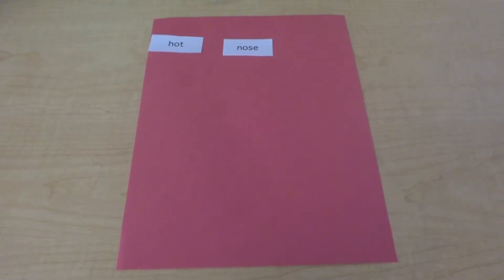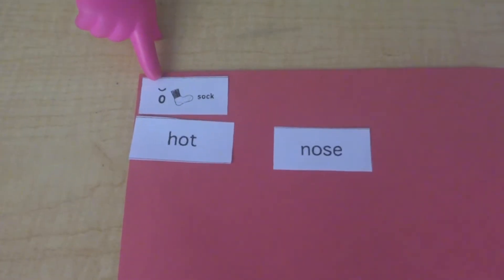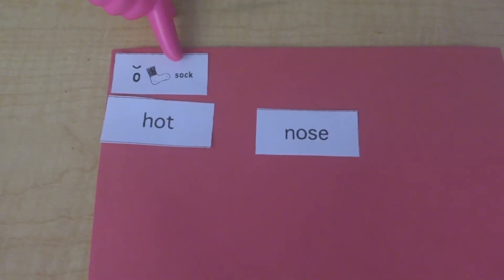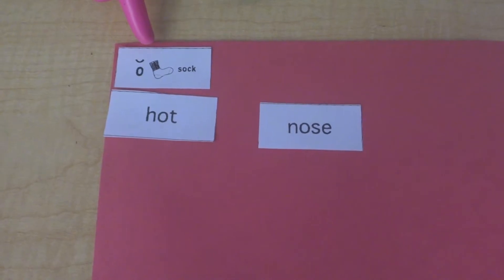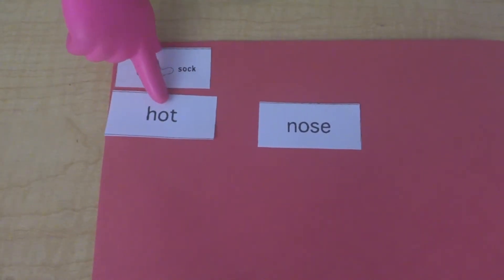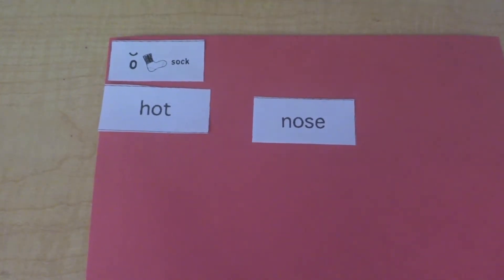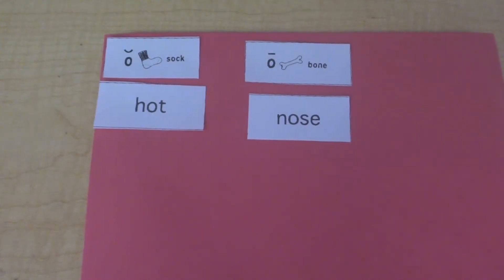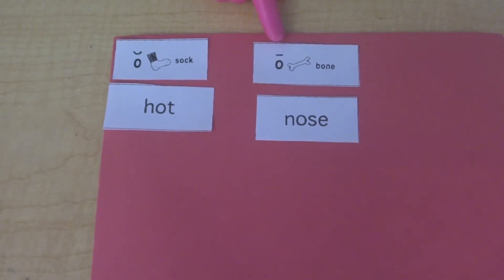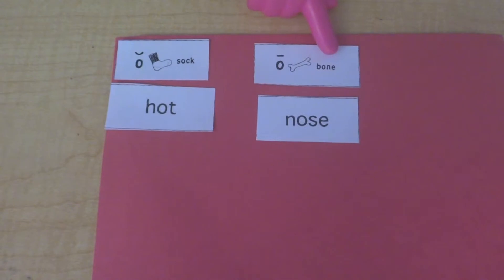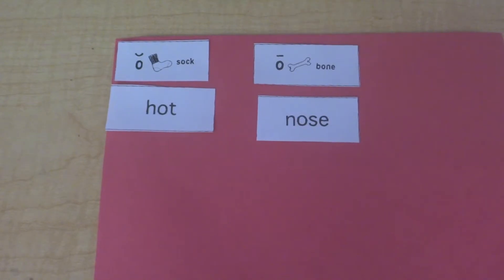These are going to be our patterns for this week. In this first column we have this one letter that says 'ah,' as in the word 'sock.' So there's that consonant-vowel-consonant, or CVC pattern — when you see this one letter in between two consonants, it usually makes the 'ah' sound. In our second column we have this one letter saying a different sound — 'oh,' as in 'bone' — and it's saying its name because of that 'e' at the end.